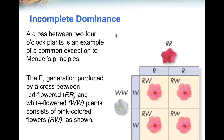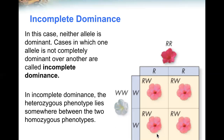A cross between two four o'clock plants is an example of a common exception to Mendel's principles. The F1 generation produced by a cross between red flowers (dominant R, dominant R) and white flowers (dominant W, dominant W) consists of pink flowers (dominant R, dominant W), as shown. In this case, neither allele is dominant. Cases in which one allele is not completely dominant over the other is called incomplete dominance.